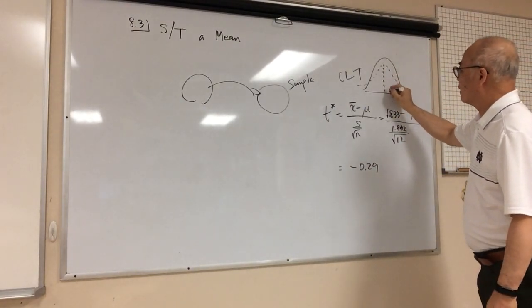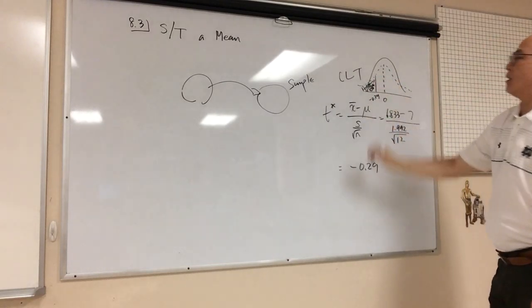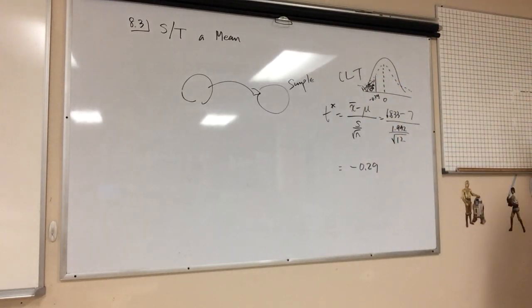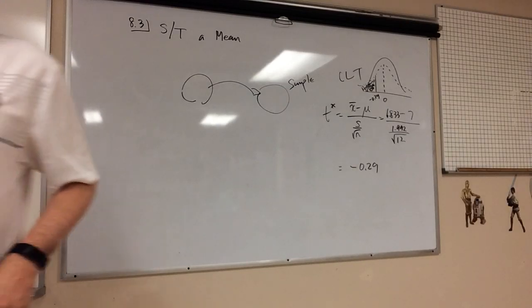So in the t distribution, this was 0, and I'm at negative 0.29 here. So I need to find this area here. How would I find that? You can actually go to the back of the book, right? Let's go to the back of the book. T distribution table. Somebody find the table for me. Where's it at? Here we go.